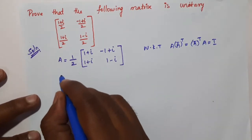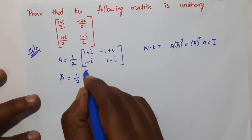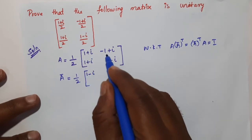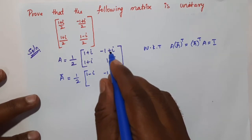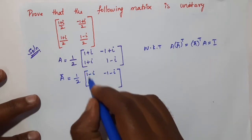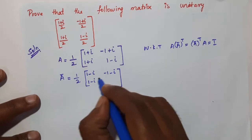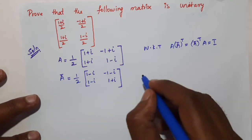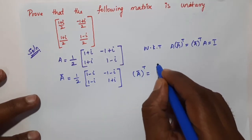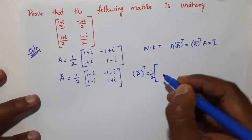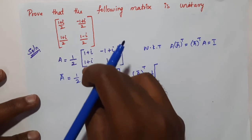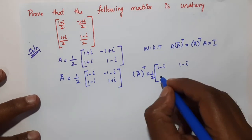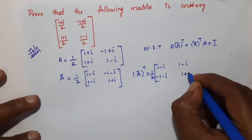Now we take the conjugate Ā. Taking the conjugate, the imaginary parts change sign: 1/2 times (1-i), (-1-i), (1-i), (1+i). Then we take the transpose: rows become columns — (1-i), (1-i) in the row; (-1-i), (1+i) in the column.